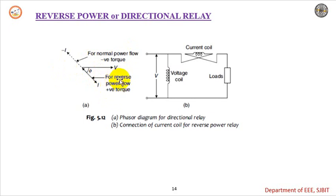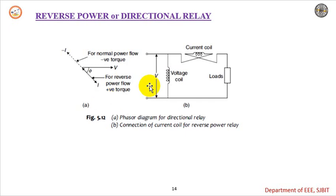Thereby the disk rotates, closes the contacts of the relay, and gives the trip signal to the circuit breaker to open the circuit. This is about the reverse power or directional relay.